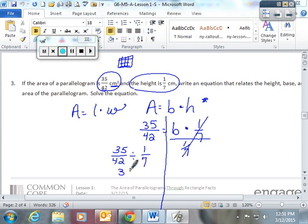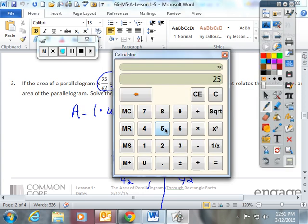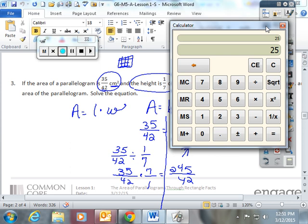So this would be keep, change, flip. That would give you 245 over 42. And if you wanted to pull your calculator out at this point, 245 divided by 42, you would get an answer of 5.83. And the 3 would be repeating. So we're going to use bar notation for your base. And that would be centimeters.